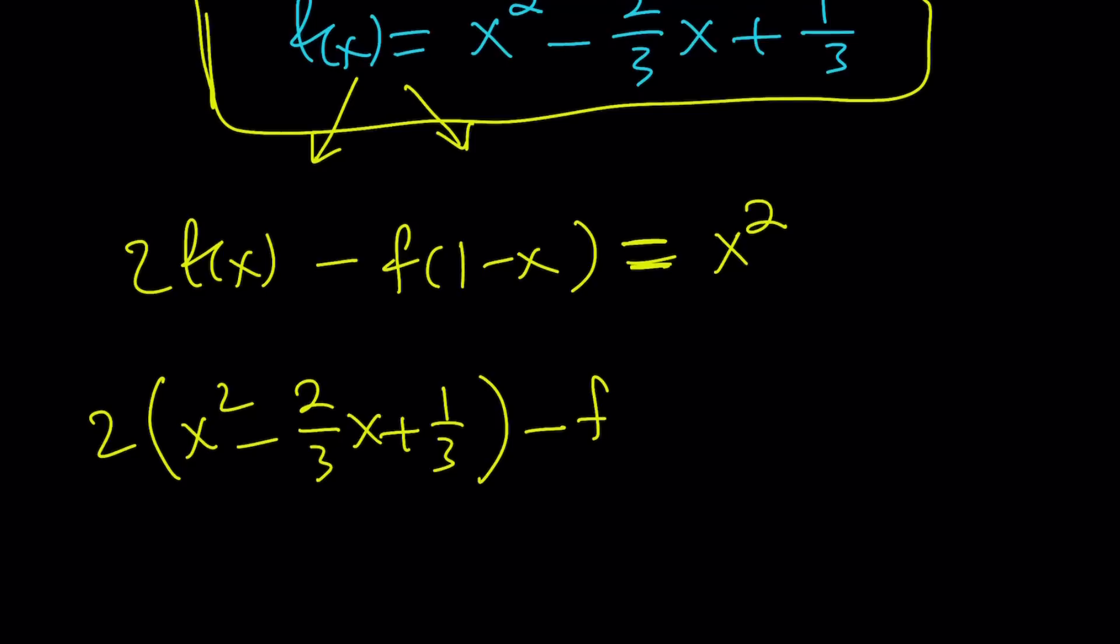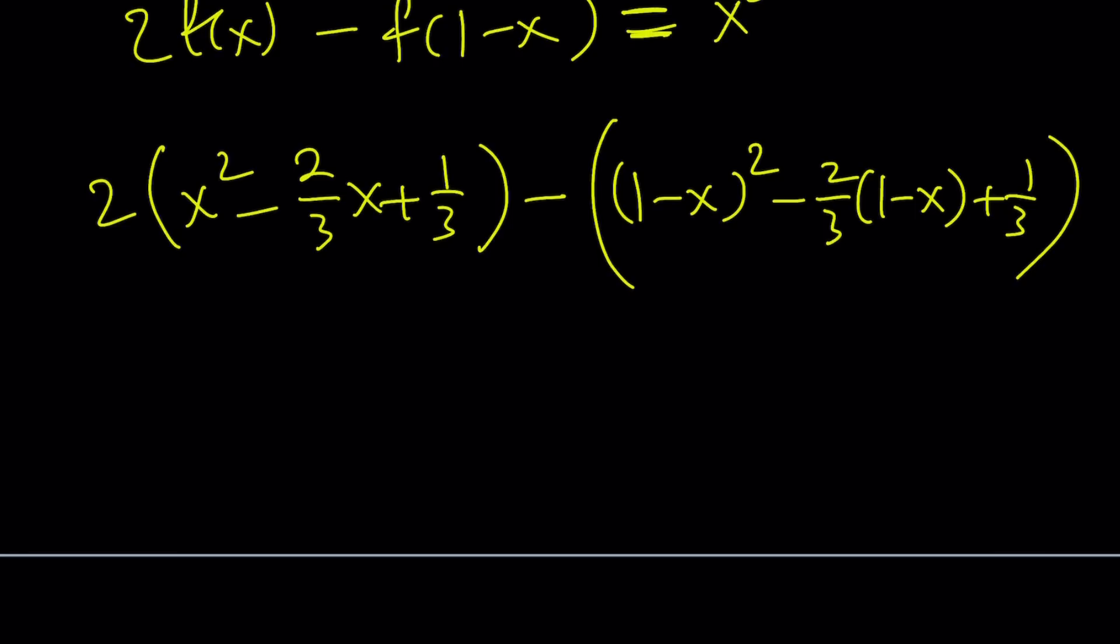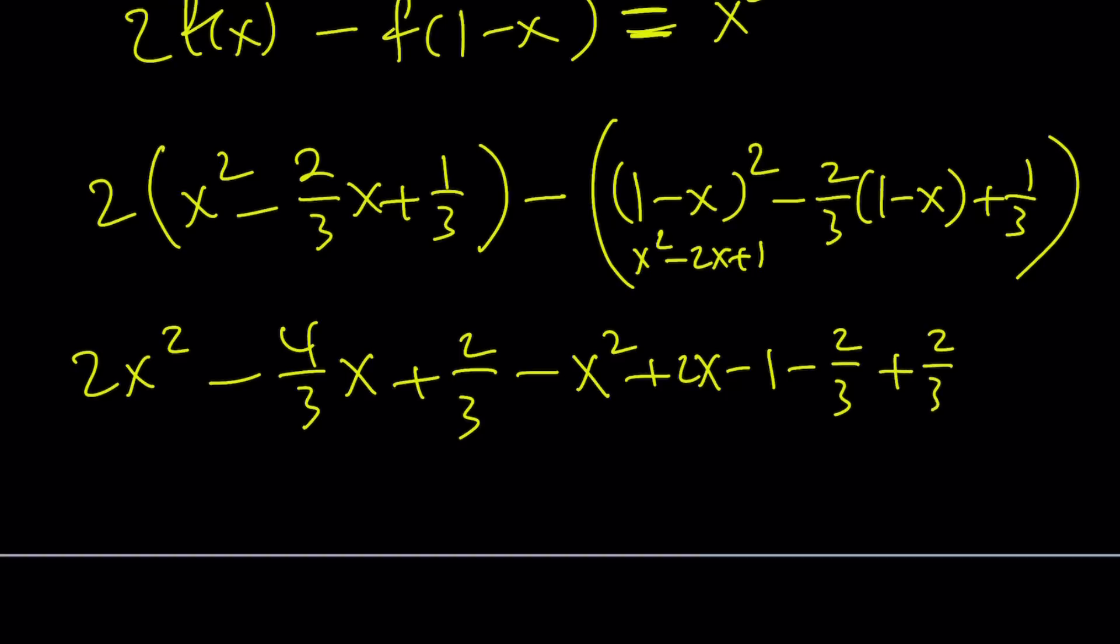Obviously, that is going to be replacing x with 1-x. So that's going to be (1-x)² minus 2/3 multiplied by (1-x) plus 1/3. It's a little torturous, but not too bad. Let's expand it: 2x² - 4/3 x + 2/3. And if you expand this, it's going to be x² - 2x + 1, but when you negate it, minus x² + 2x - 1. It's going to be -2/3 + 2/3 x, and finally minus 1/3.